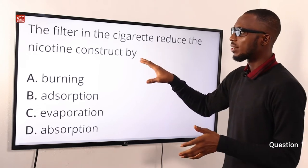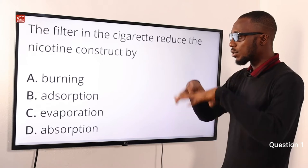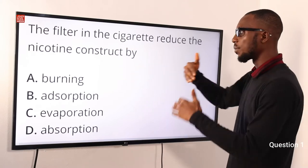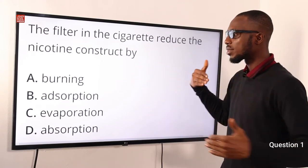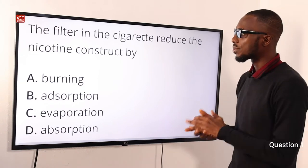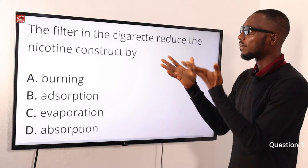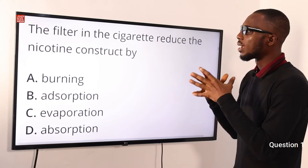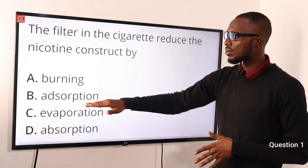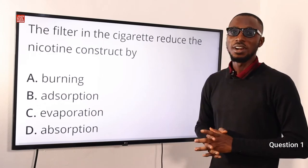The nicotine is being adsorbed to the surface of the filter, so much of it cannot go past the filter. This reduces the nicotine intake. The filter in the cigarette reduces the nicotine content by adsorption — option B is the correct option.